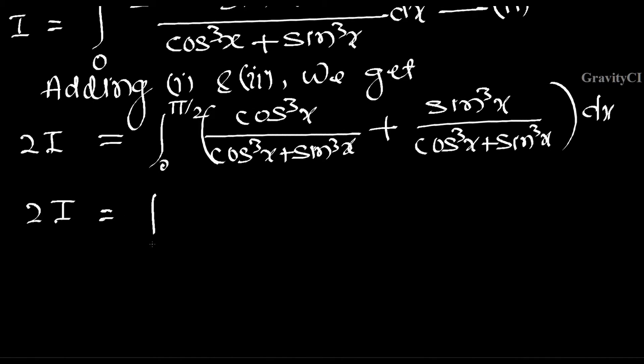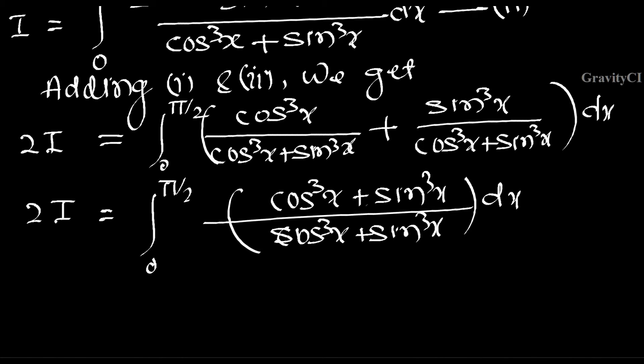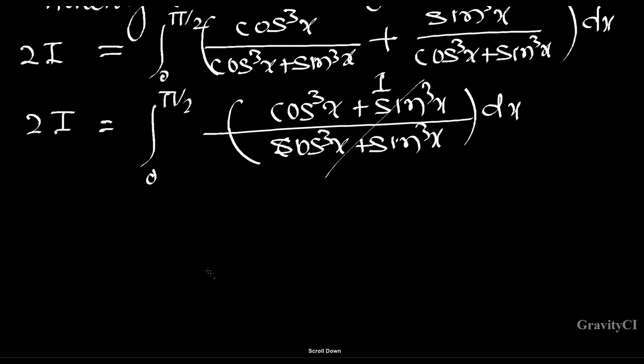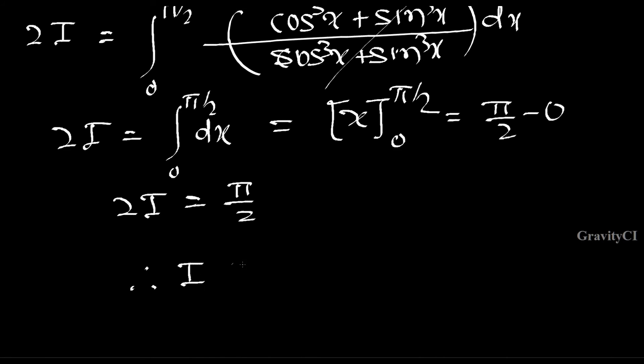So 2I equal to integral 0 to π/2, the numerators combine to give cos³x + sin³x over the common denominator. Evaluating the integral from 0 to π/2, we get 2I equal to π/2. Therefore, I equal to π/4. Hence proved.